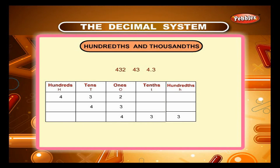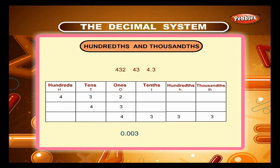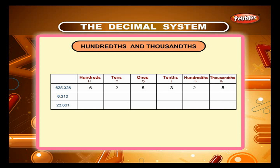3 hundredths in the decimal system is written as 0.03 and read as 0.03. If 3 moves further from the hundredths place to the right by 1 place, its place value is 3 divided by 1000. This is written as 3/1000 and read as 3 thousandths. In the decimal system, 3 thousandths is written as 0.003 and read as 0.003. Now, the place value chart can be extended to hundredths and thousandths.